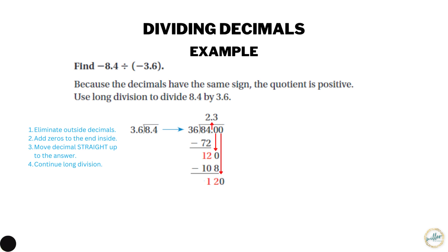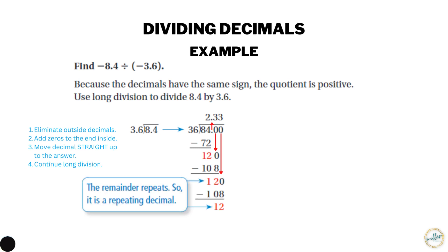We get 12 again and bring down the zero, giving 120 again. We already know 120 divided by 36 is 3, so we're repeating the same process. The remainder keeps repeating — we continue to get 12, then 120, subtract 108 — so the remainder repeats. Since it repeats, we get a repeating decimal: our answer is 2.3 repeating, or 2.3333...